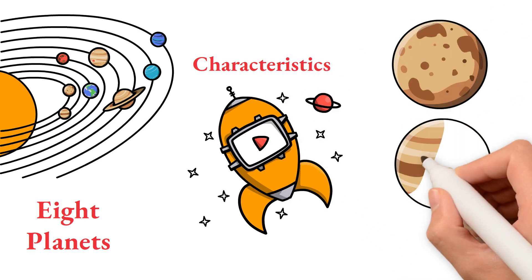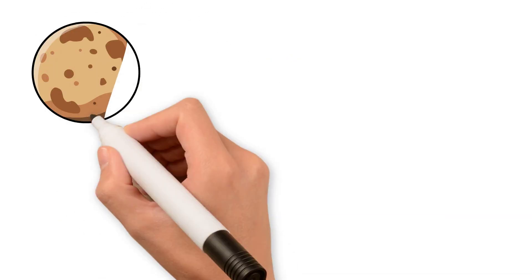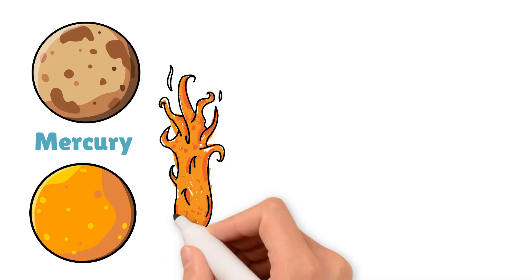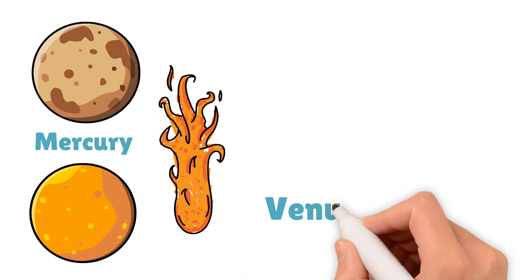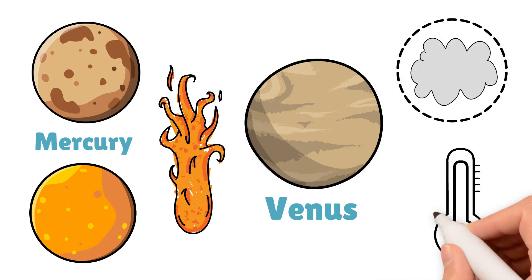Closest to the Sun are Mercury and Venus, two small rocky planets. Mercury is the closest planet to the Sun and is the hottest planet in our solar system. Venus is slightly larger than Mercury and is covered in thick clouds that trap heat, making it even hotter.